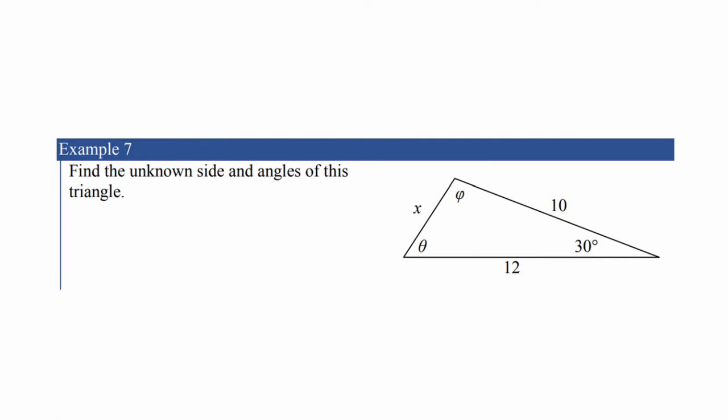Find the unknown side and angles of this triangle. Now don't be confused by this - they change the symbols around on you. The top corner, that angle is phi, and the bottom left, that's theta. The actual symbols don't matter. What matters are the relationships.